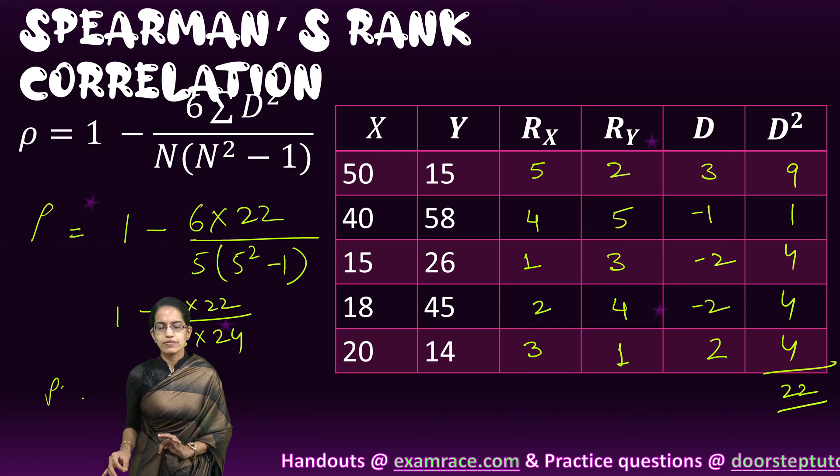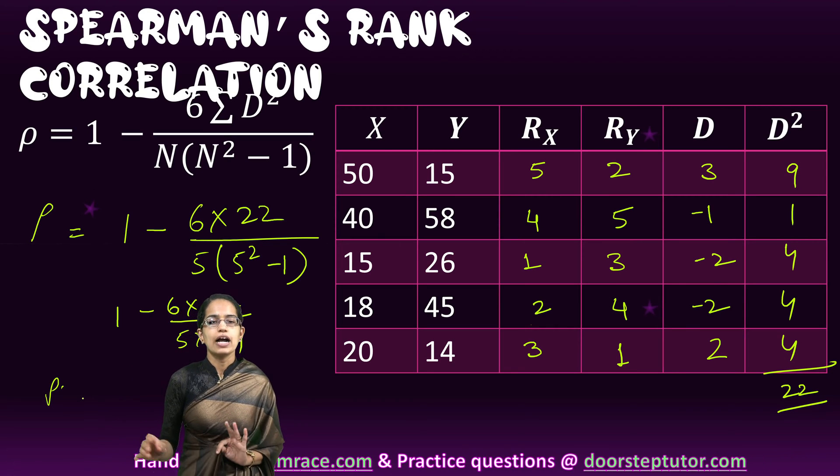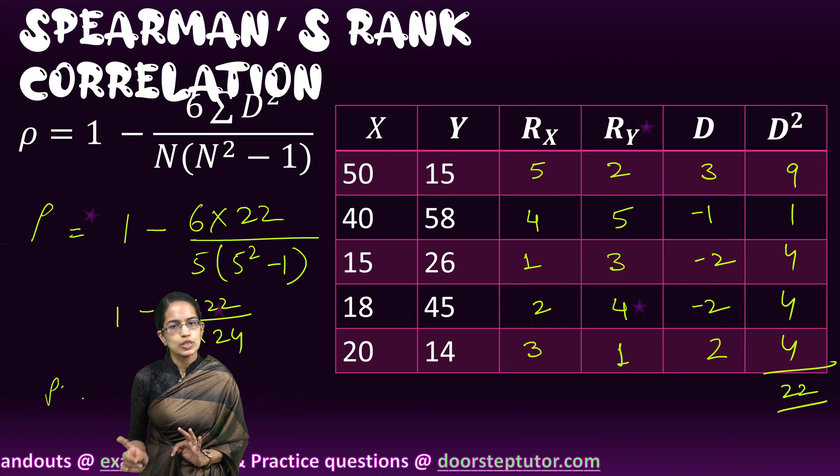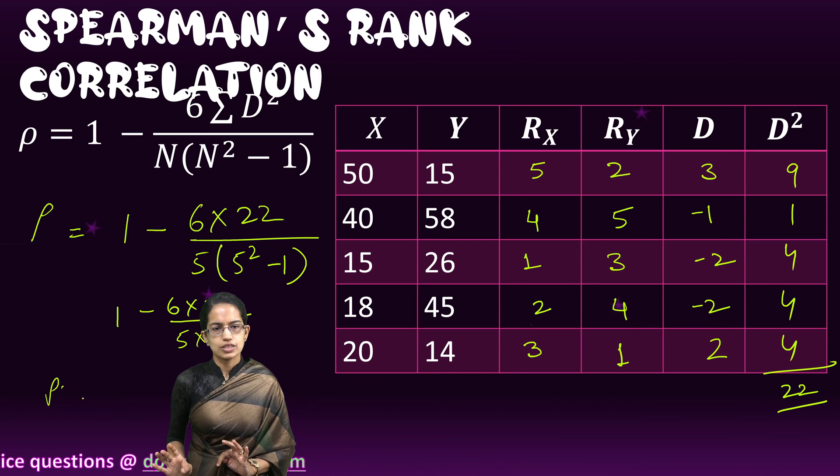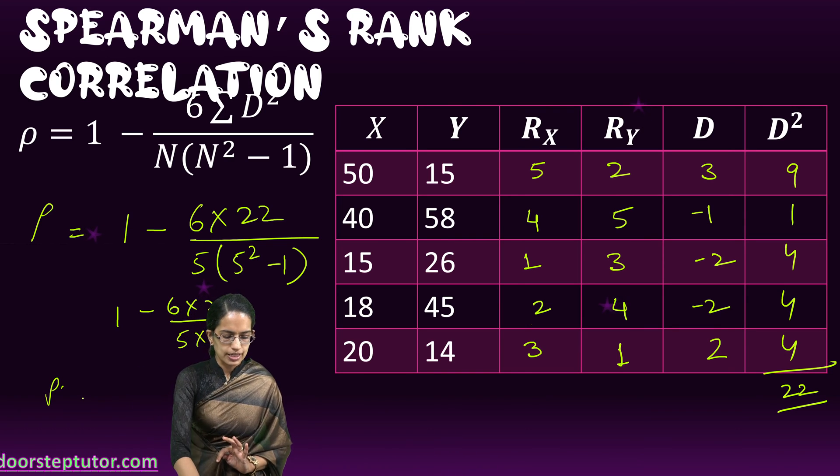That's what we have as the rank correlation given by Spearman. Very simple, very direct method of finding out the relationship between two sets of data, set X and set Y. We understand the relationship between the two sets of data here. Thank you.